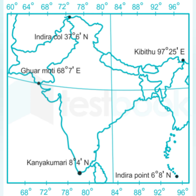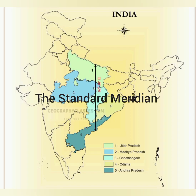The southernmost point of India is Indira Point, which is a village in the Nicobar district of the Andaman and Nicobar Islands. The northernmost point of India is at Siachen Glacier, which is in Jammu and Kashmir at Indira Col. The easternmost point is at Kibithu, which is in Arunachal Pradesh.